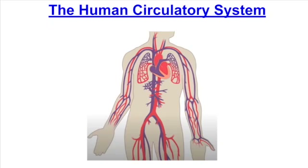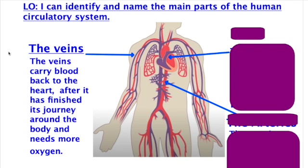In this lesson, we're going to take a look at the human circulatory system. The learning objective is: I can identify and name the main parts of the human circulatory system.